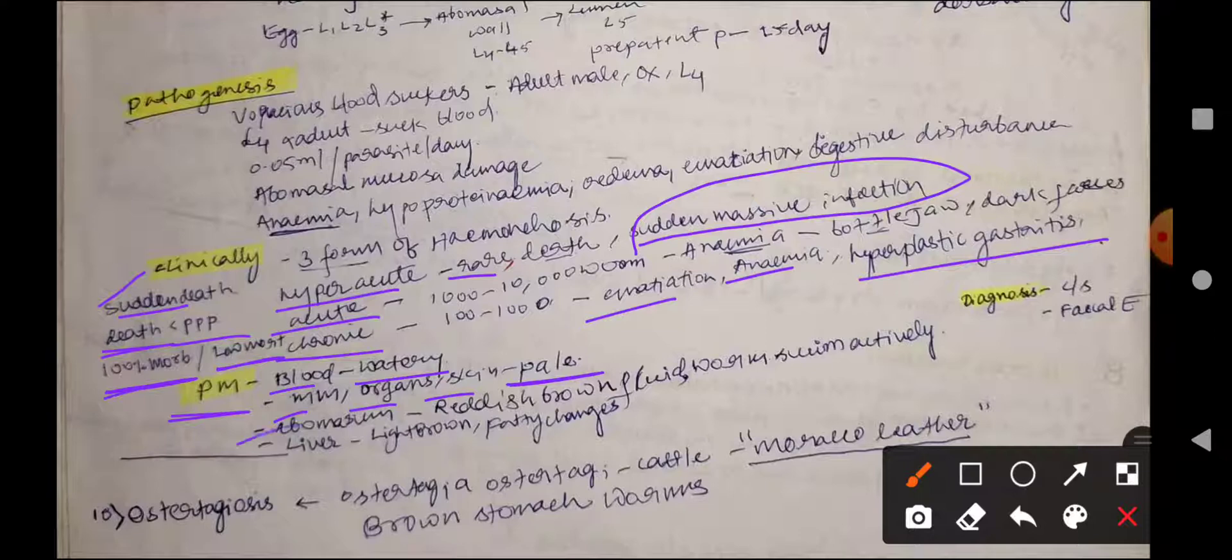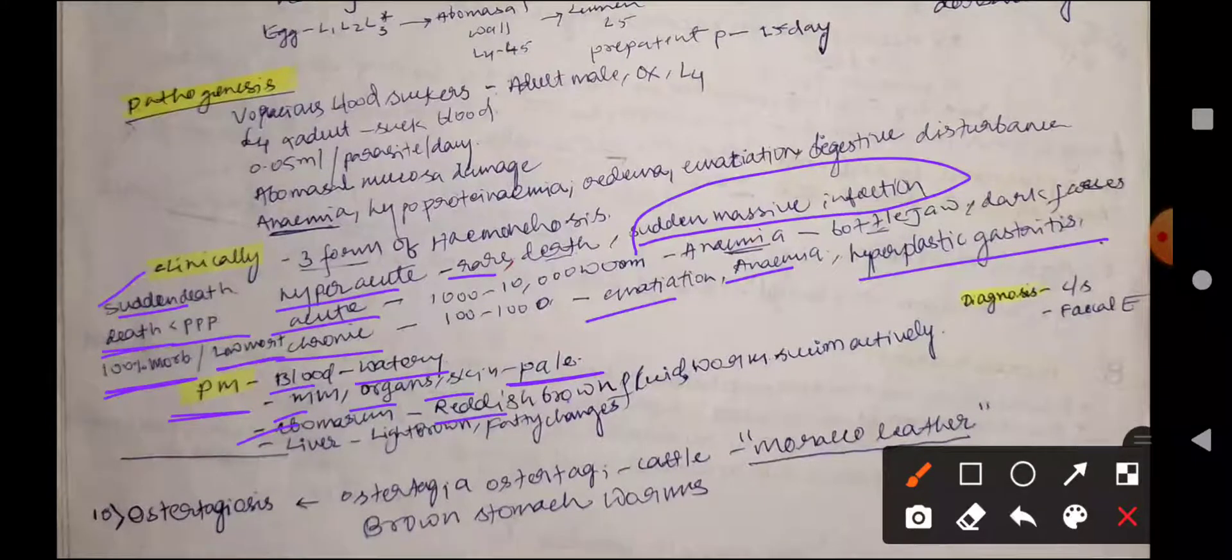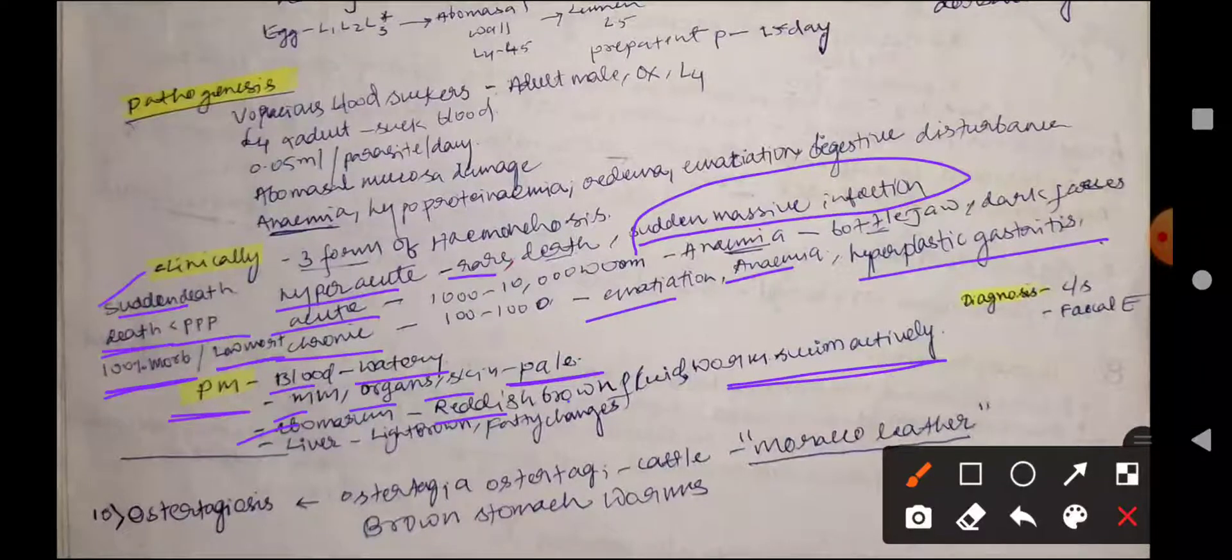The abomasum is reddish brown with fluid-filled worms swimming inside the reddish brown fluid.